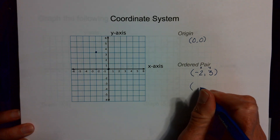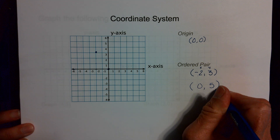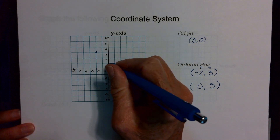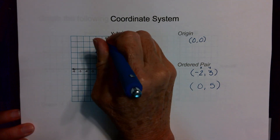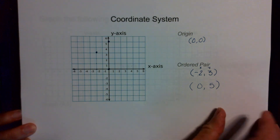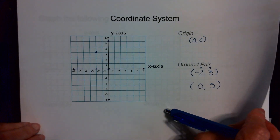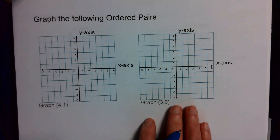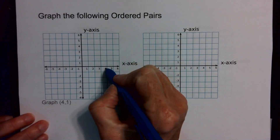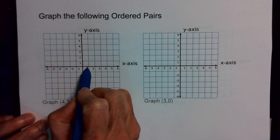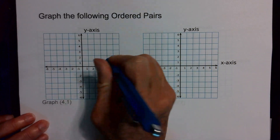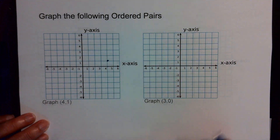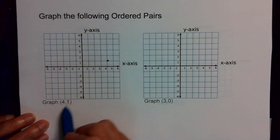If I wanted to graph the point (0, 5), then I have zero on my x-axis, which is right there in the middle, and I'm going to go up five — one, two, three, four, five. Let's practice. I have the point (4, 1): I go over one, two, three, four on my x, and I go up one on my y. If I go down it's negative, if I go up it's positive. So this is the point (4, 1).